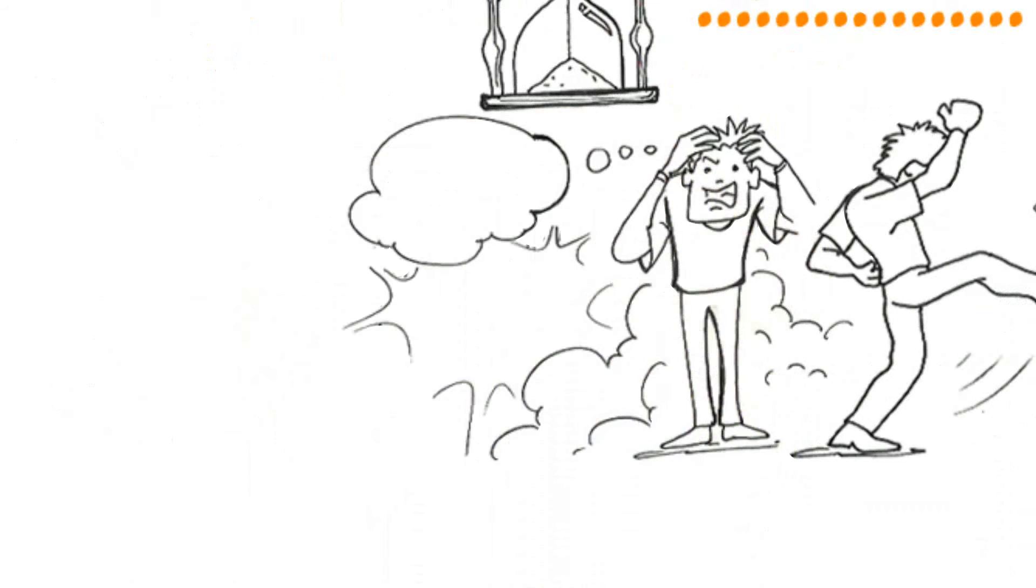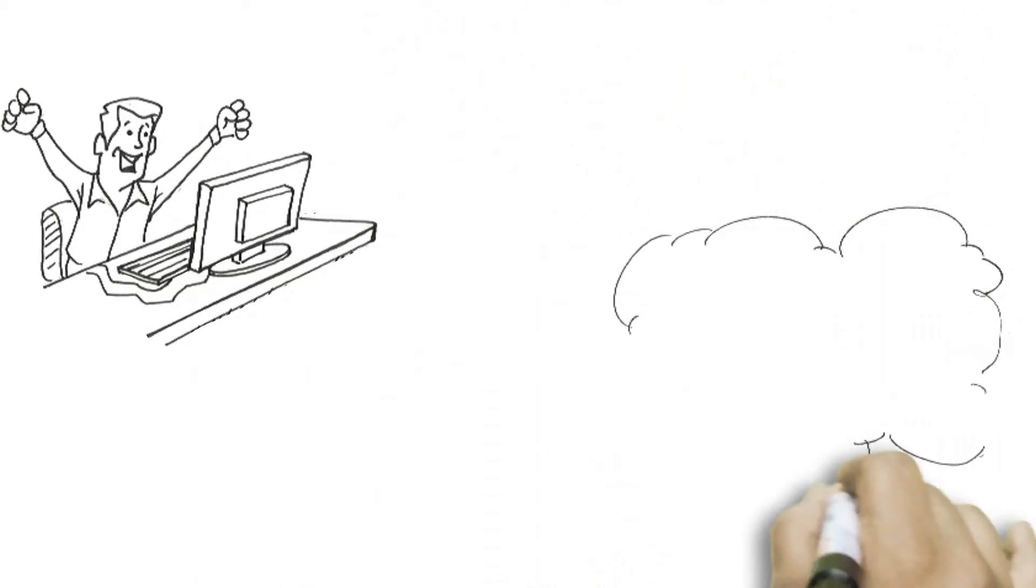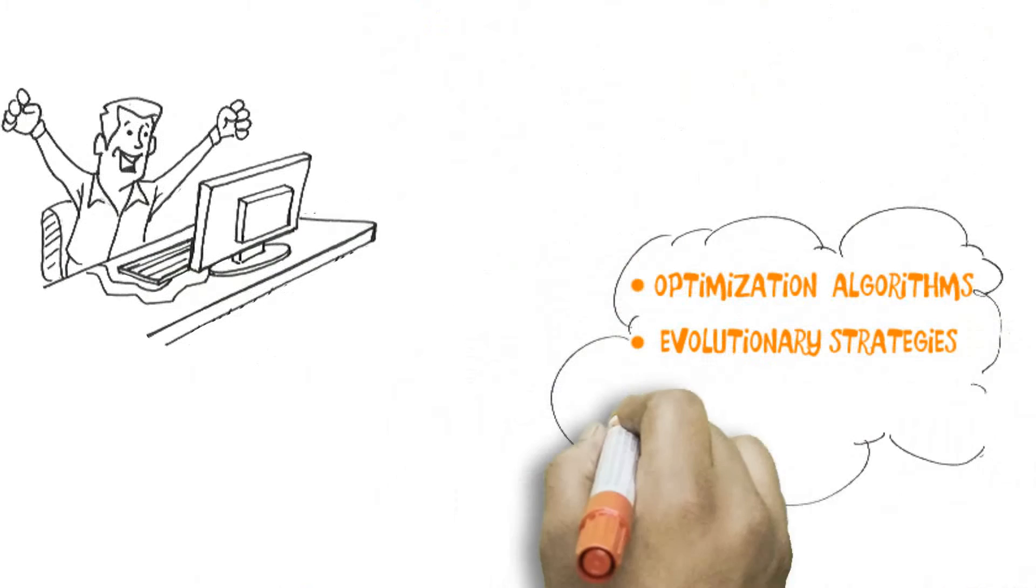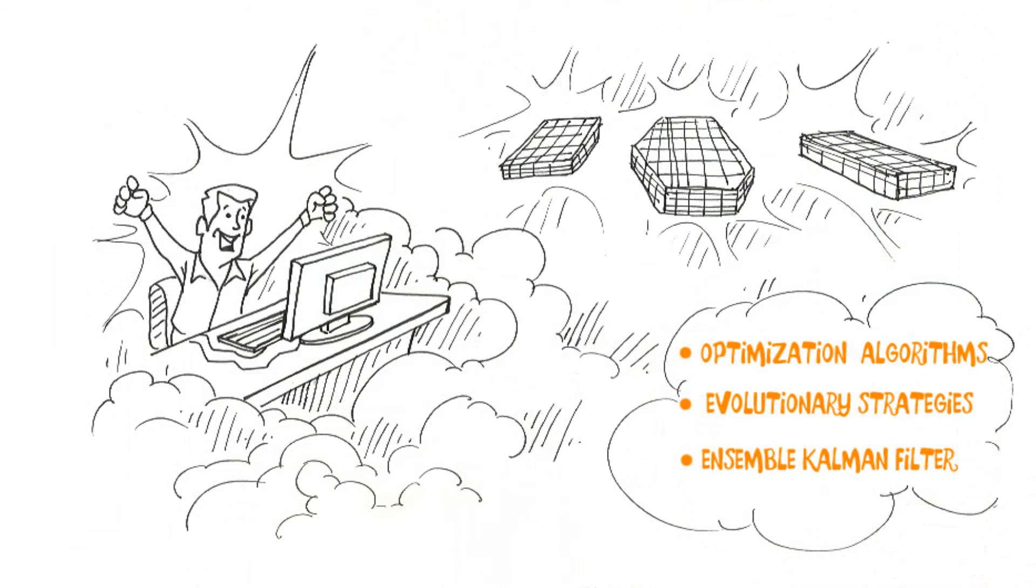So the question is this: Is there a more efficient way to do this? In my research, I use different optimization algorithms to obtain not one, but several calibrated models in a fraction of the time required for a manual match.